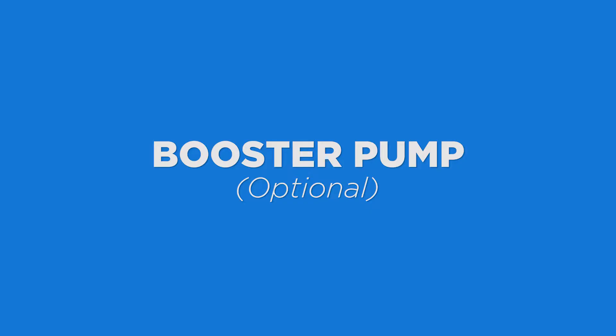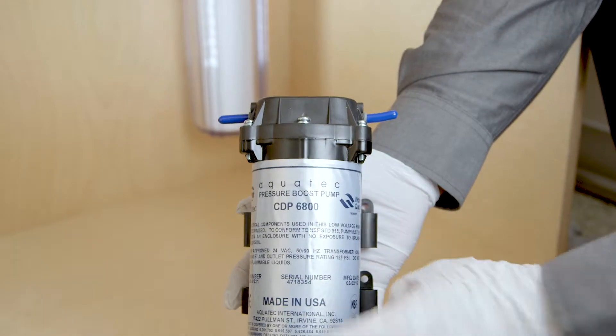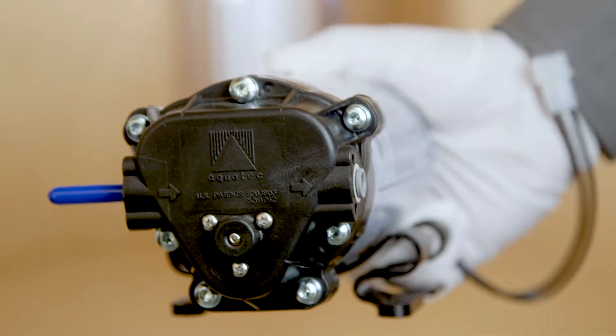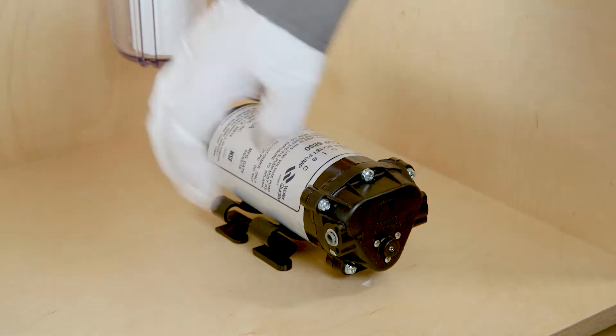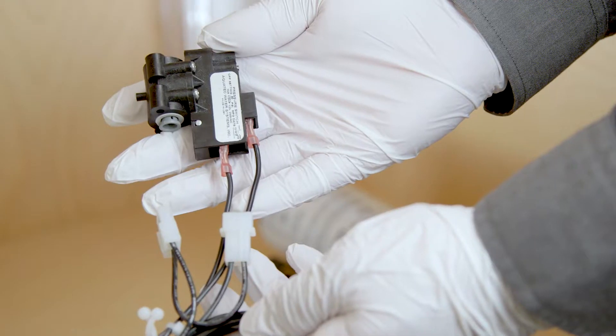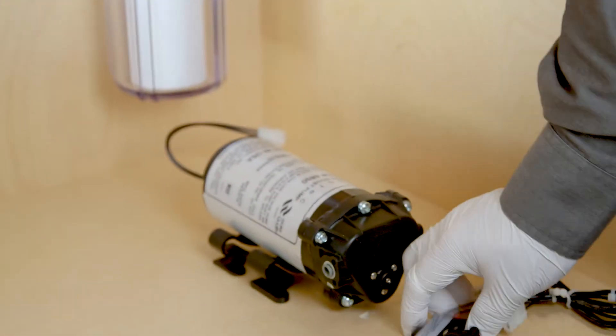Booster pump. This is optional. If a booster pump is included, start by removing the rubber plugs from the in and out ports. Place or mount the booster pump on the wall with the included hardware. Set the pressure switch aside as you'll need it later.